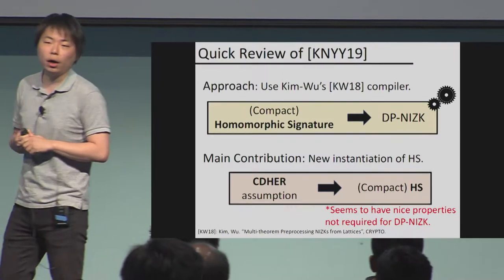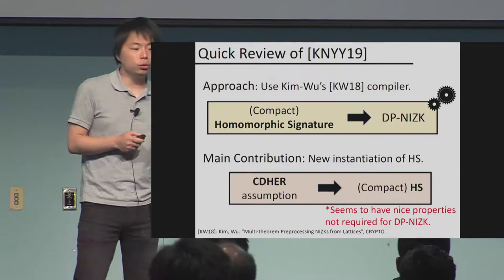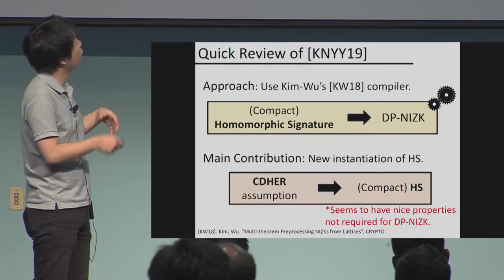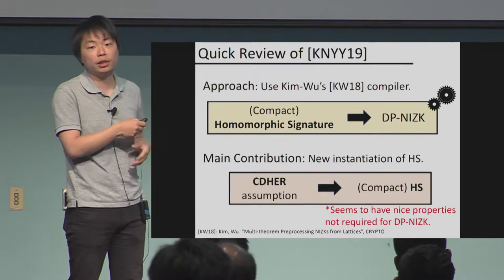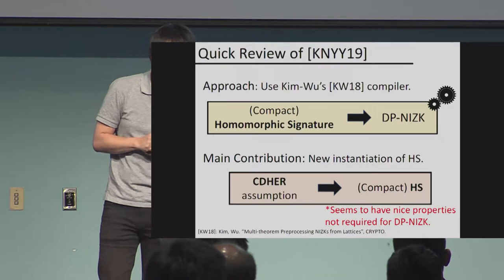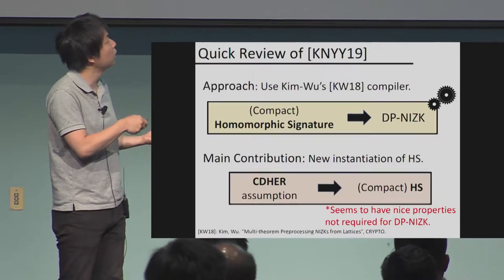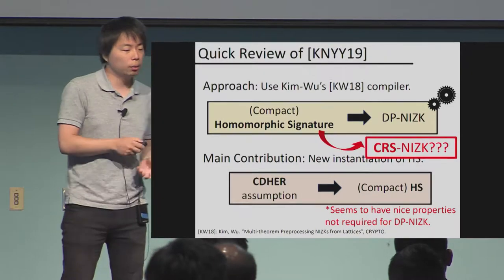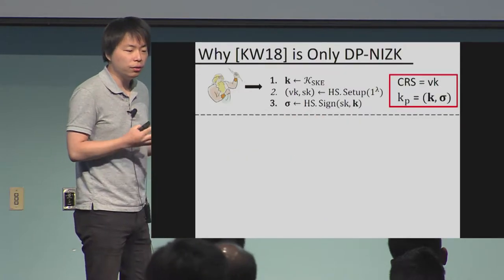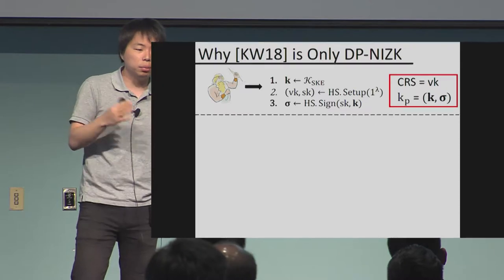Let me give a quick review of our EuroCrypt work. Our approach used Kim-Wu's conversion from Crypto '18, which allows you to convert any compact homomorphic signature scheme into a designated prover NIZK. The main contribution of that work was a new compact homomorphic signature from the CDHR assumption, which gave a DP NIZK from that assumption. In retrospect, we observed that this construction had many nice properties not fully exploited in the DP NIZK conversion — so a natural thought was: can we use these properties to construct a CRS NIZK?